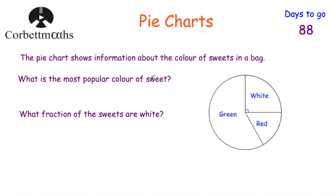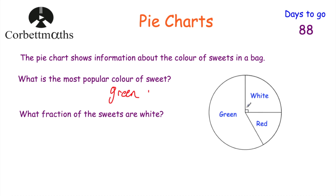The first question: what is the most popular color of sweet? We've got green, white and red. A pie chart doesn't tell us how many sweets there are, but it tells us the proportion. Most of the sweets are green because it has the biggest sector. A quarter are white because that's a right angle — a quarter of the circle. Red is the least common as it has the smallest sector. So the most popular color is green.